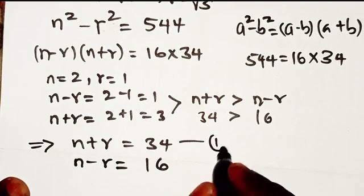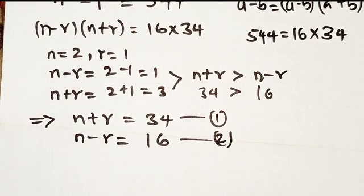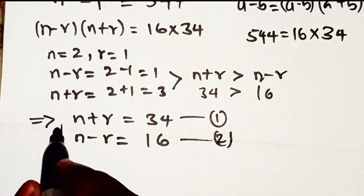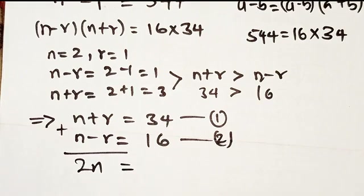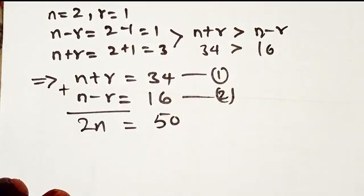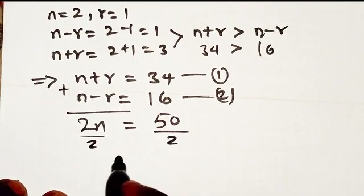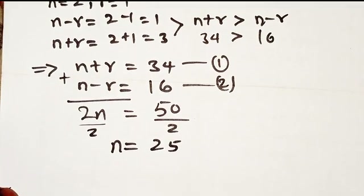We're going to solve this system simultaneously. Adding both equations, r is eliminated because r - r equals zero, and we get 2n equals 34 plus 16, which is 50. Dividing both sides by 2 gives us n equals 25.